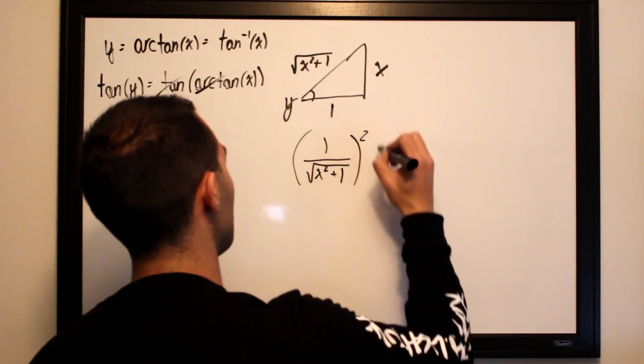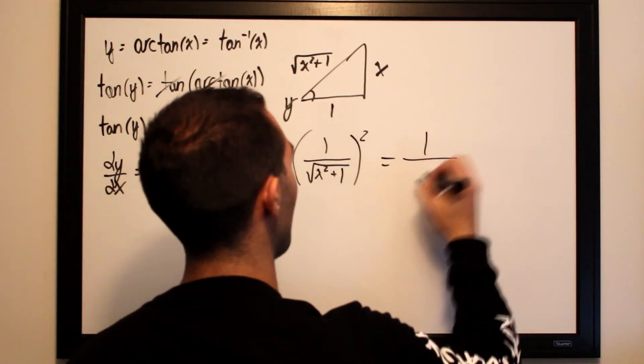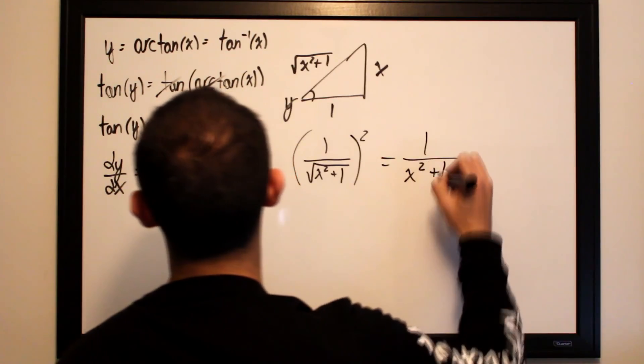Now we have to square it, and that equals 1 over x squared plus 1.